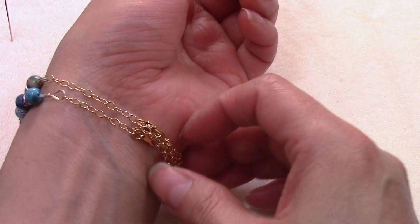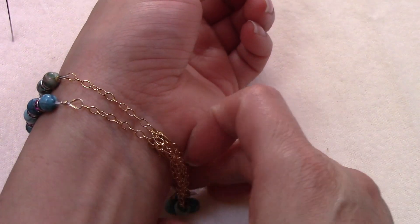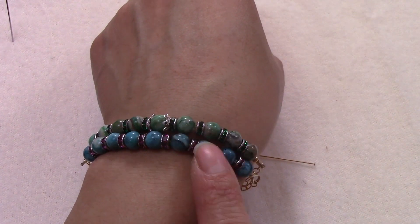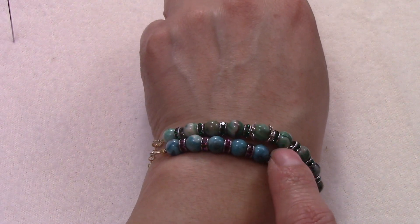The materials that we're going to use are two head pins, wire guardians, crimp beads, lobster clasp, we're going to need nine six millimeter round beads, we're going to need rondelles and these ones are five millimeters.